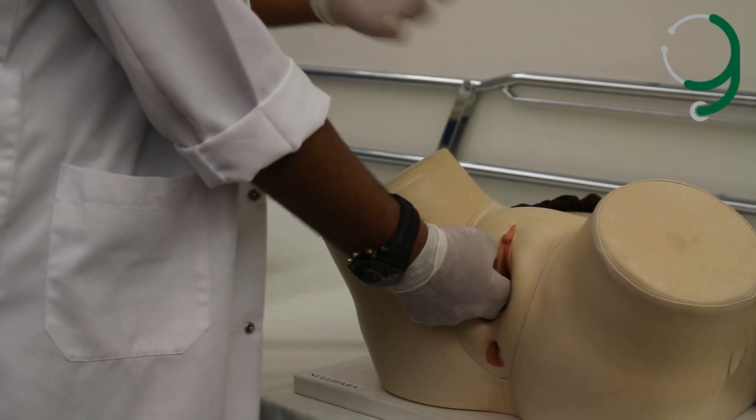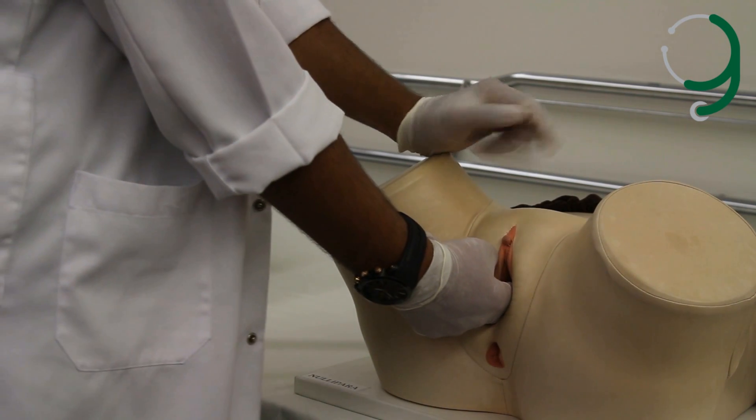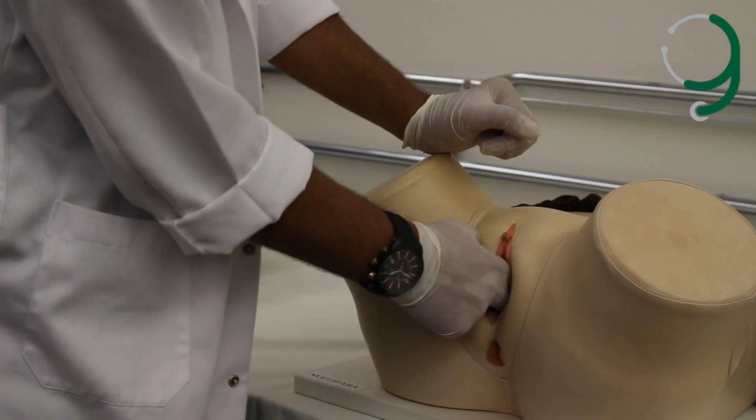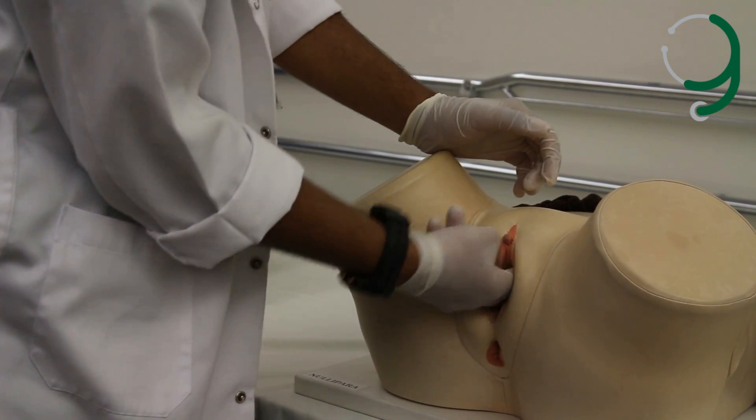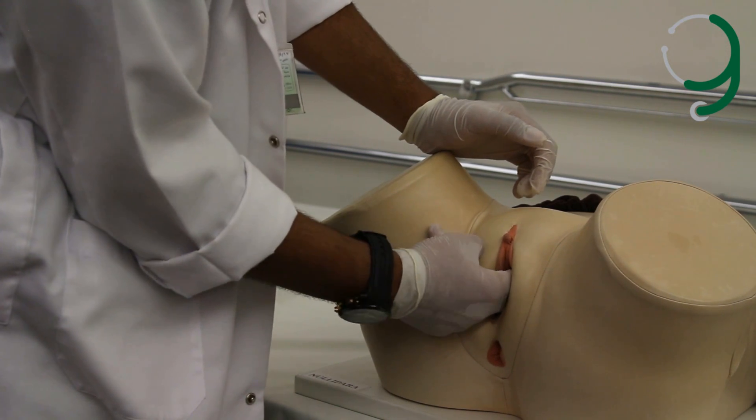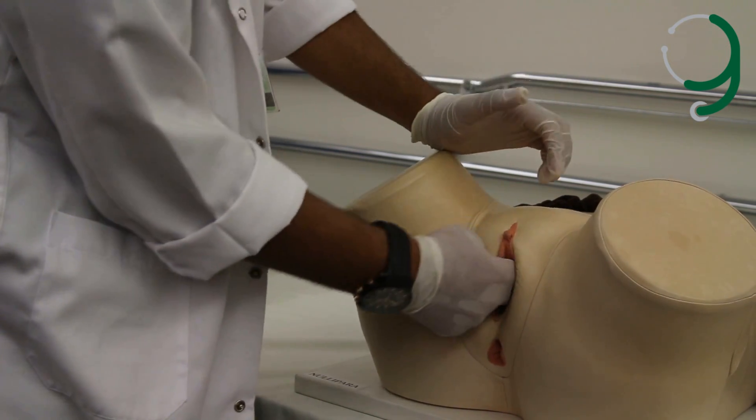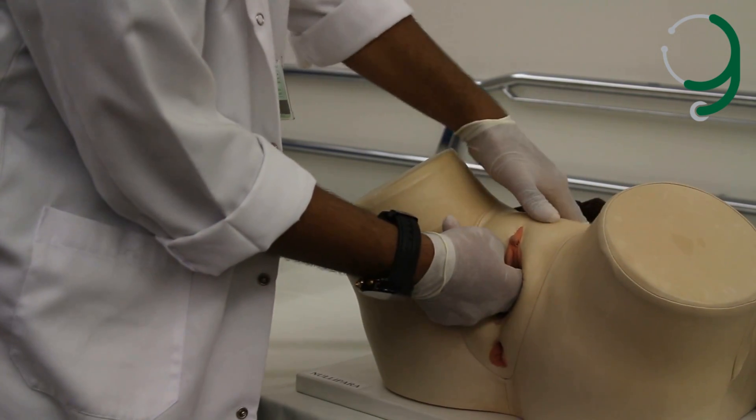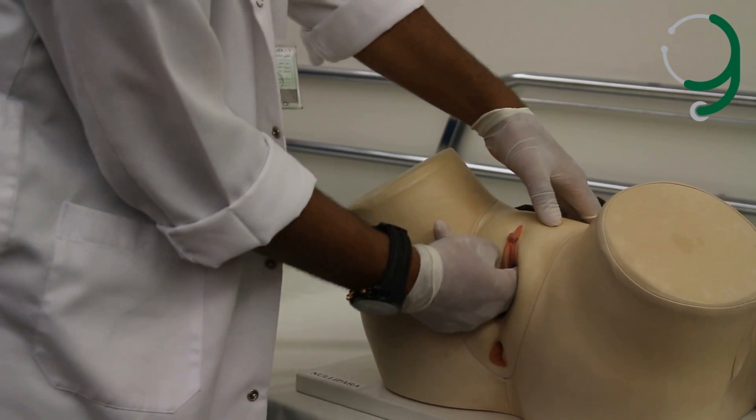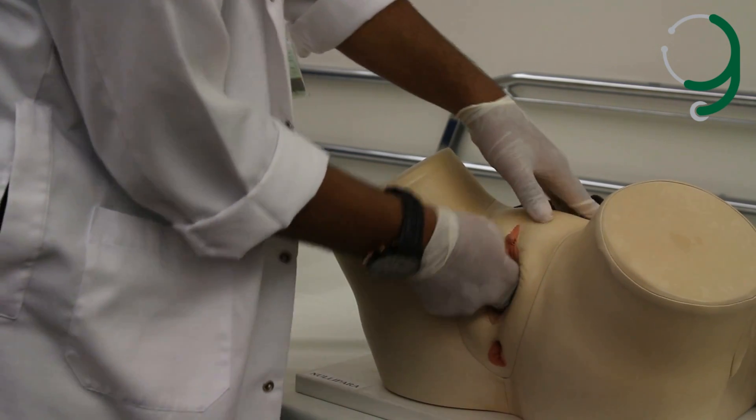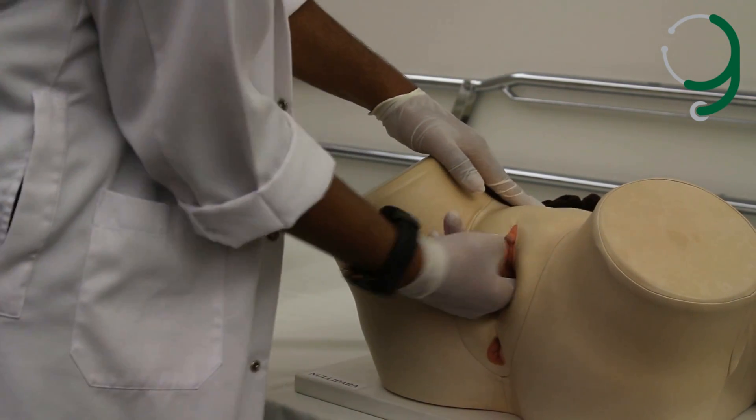Next, you palpate the adnexa, which aren't palpable normally unless they are enlarged or inflamed. You move your hand laterally to the position you were. You just slide it on the fornix, around the cervix, and then apply pressure just on the same spot above your finger. And then move to the left side and do the same.